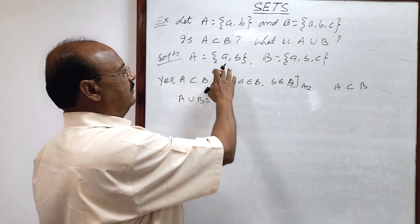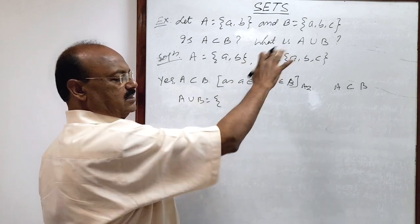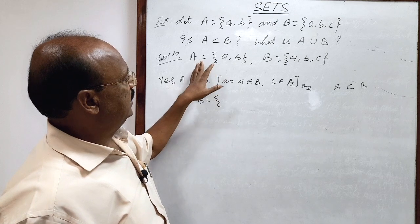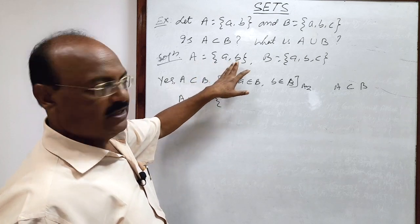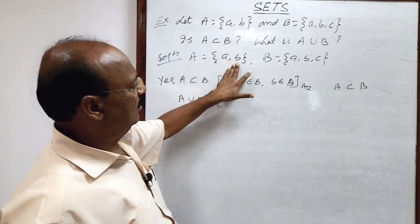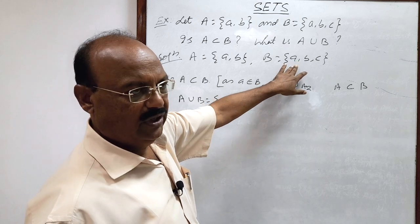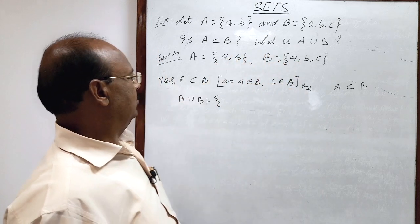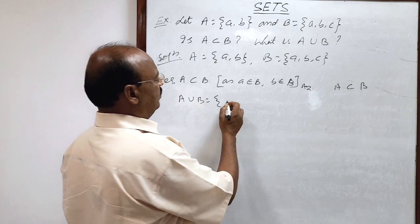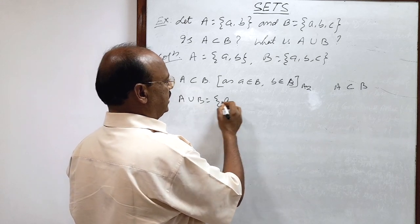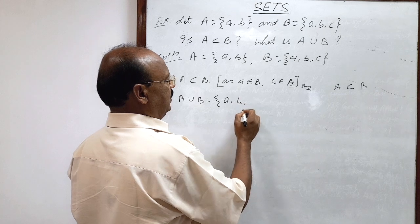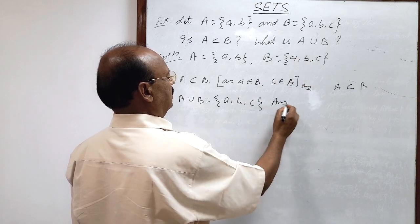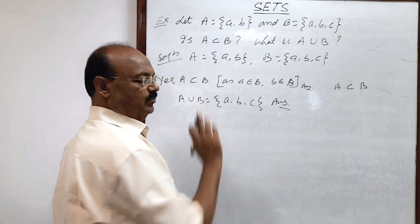We will keep all the elements from these two sets. But set A has these two elements a and b which are also available in set B. So there is no extra element in set A. Therefore, elements in A union B will be the set having elements a, b, and c. This is the answer for A union B.